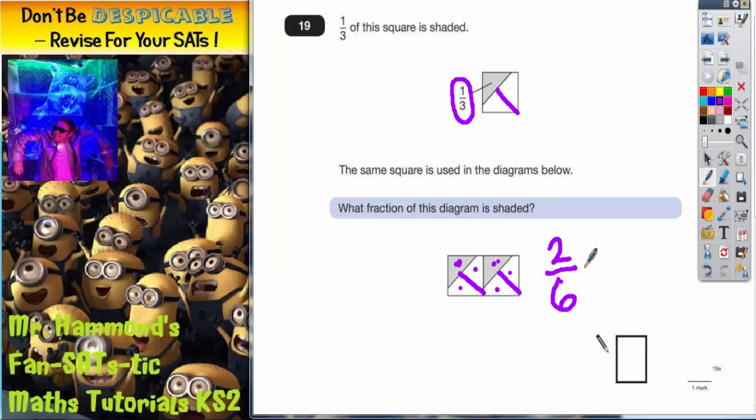So we could say that's two out of six. And if we cancel down our fraction, half of two is one, half of six is three, we still have one third. In other words, one section in every three is shaded in. So that's correct. One third.